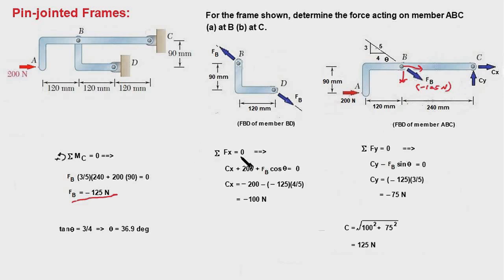Next we write the equation: Sigma Fx equal to 0, and that will be Cx plus 200 plus FB cos theta, which is the x component of FB. This angle is theta, which is same as this. Notice here that I have not made any changes in the direction of FB. I have written the value of FB as minus 125 N.